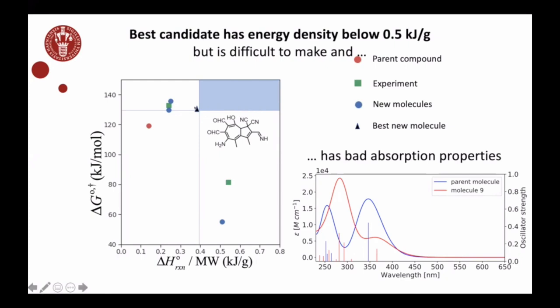A relatively low storage density, and it also has relatively bad absorption properties. The blue one here is the computed absorption spectrum for the parent molecule DHA, and this molecule 9 is the molecule you're seeing here. The absorption peak has shifted away from the visible region, so it has several strikes against it.